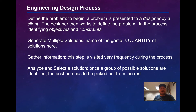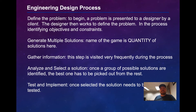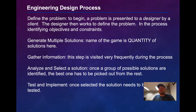The next step is to analyze and select — this is what we call engineering decision-making. Once you have a group of possible solutions that more or less meet the objectives and constraints, you identify which solution is the best one and how to move forward. The next step is to test and implement. Once you've chosen a solution, you test it, build a prototype, and most likely you will iterate through these processes before arriving at a final solution — the product or service being delivered.